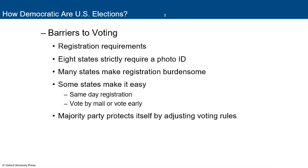Some states make it very easy — California, for instance. These states have same-day registration, vote by mail, or vote early. They'll send out mail-in applications at the very least, making mail-in voting easy. Texas, being a Republican-controlled state, has made mail-in voting more difficult because Republicans tend to believe it has the potential for fraud. There hasn't been a lot of proof to that effect.